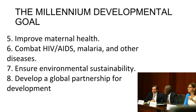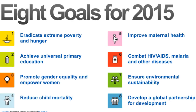Let us recap the Millennium Development Goals. Number 1: Eradicate extreme poverty and hunger. Number 2: Achieve universal primary education. Number 3: Promote gender equality and empower women. Number 4: Reduce child mortality. Number 5: Improve maternal health. Number 6: Combat HIV, AIDS, malaria, and other diseases. Number 7: Ensure environmental sustainability. Number 8: Develop a global partnership for development.